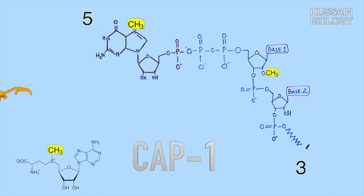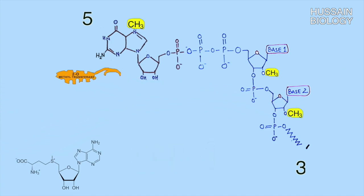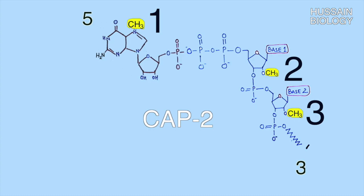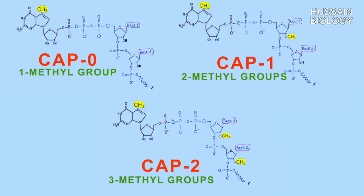Similarly, if one more methyl group is added to the second ribose sugar at the same position, as shown in the diagram, we call it the cap two structure. In cap two we have a total of three methyl groups, in cap one we have two methyl groups, and in cap zero we have only one methyl group attached to guanosine at the seventh position.